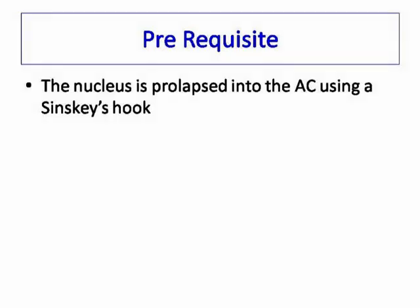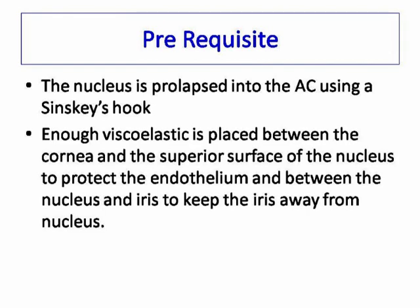The nucleus is prolapsed into the anterior chamber using a Szynski's hook. Enough viscoelastic is placed between the cornea and the superior surface of the nucleus to protect the endothelium, and between the nucleus and iris to keep the iris away from the nucleus.